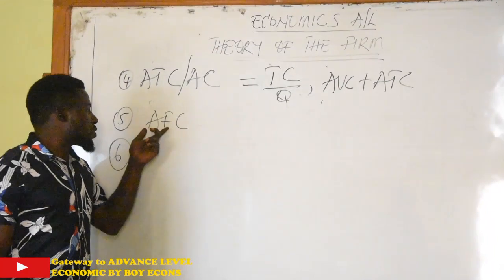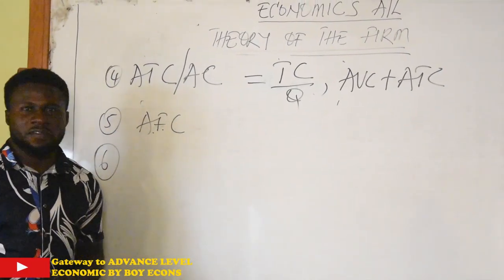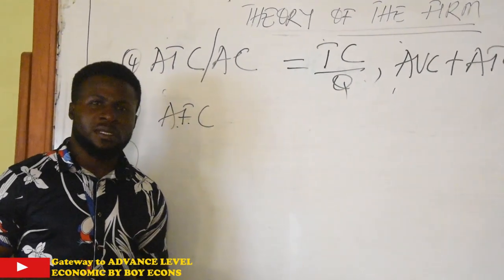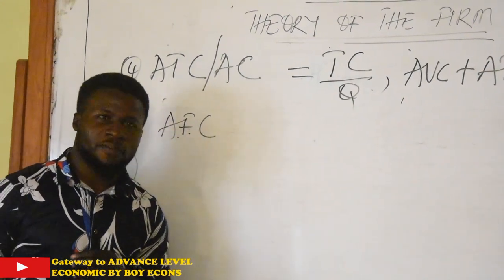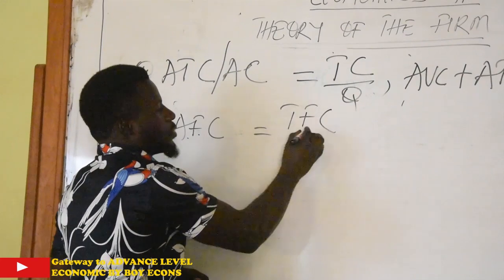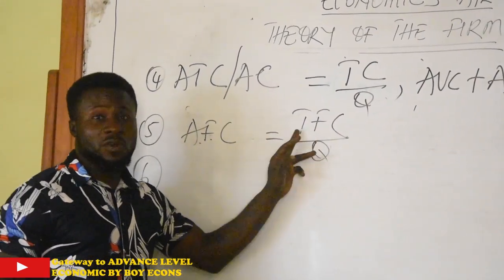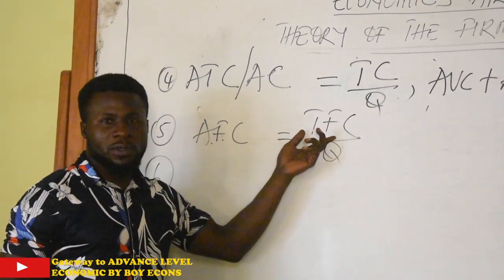So the fifth concept of cost is average fixed cost, abbreviated AFC, which is that portion or proportion of fixed cost that is spent on each unit of output or a single unit of output. It is calculated as total fixed cost divided by output. If you are given total fixed cost and output to calculate AFC, that is how you go about it.